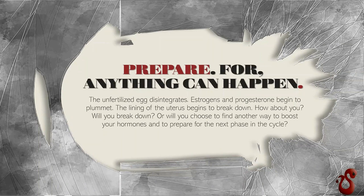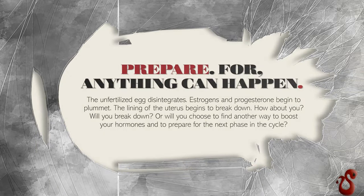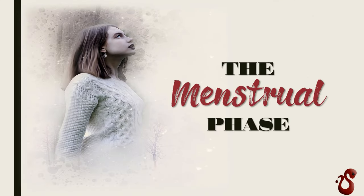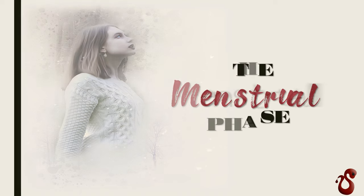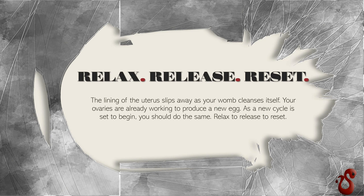Finally, we have the menstrual phase, and the theme I chose for this phase is relax, release, reset. During this phase the bleeding begins, the lining of your uterus slips away as your womb cleanses itself, and a new egg is about to form in the ovary. This is where the overlap begins between the menstrual phase and the follicular phase — a new cycle is about to begin, and you should do the same: relax, release, and reset.